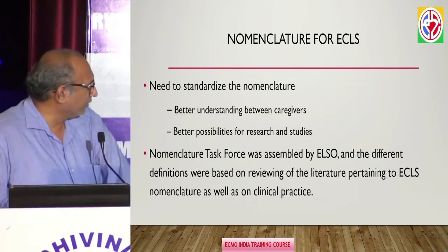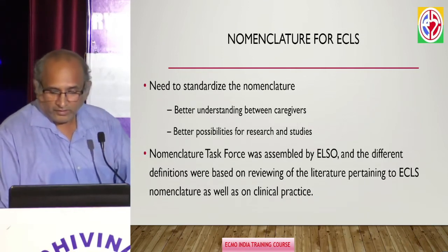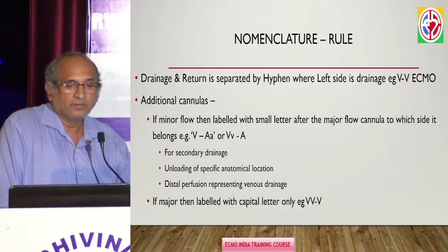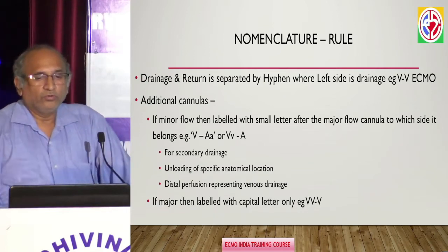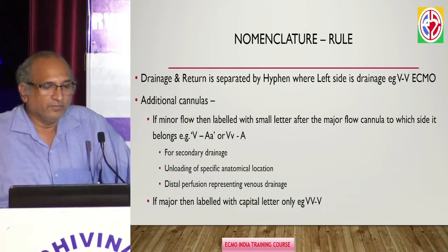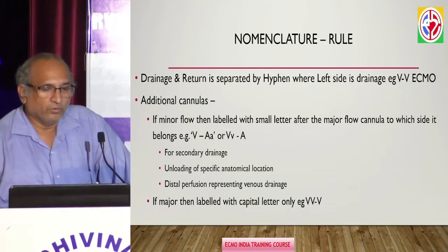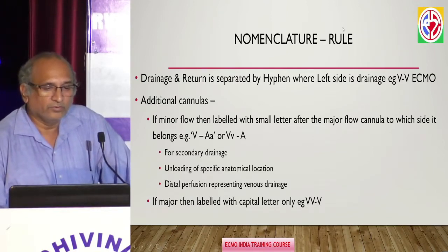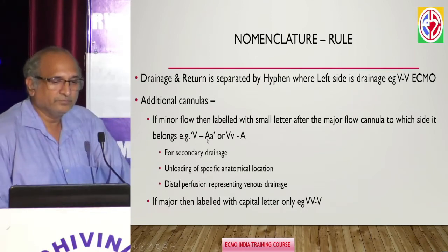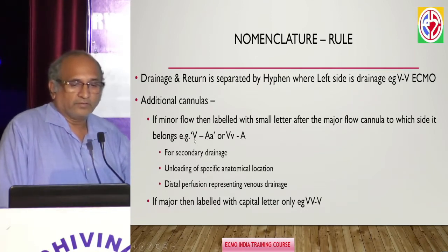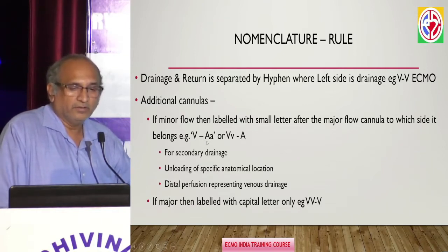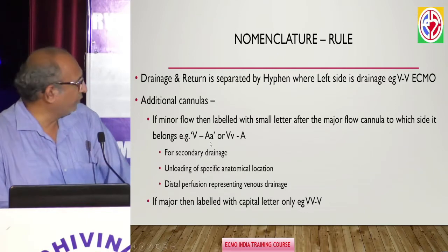We know that we should have a standard nomenclature, and the ELSO task force has taken on the task to standardize the nomenclature for ECLS. There are certain rules: drainage and return cannulas are separated by a hyphen. A capital letter means a major vessel has been connected; a small letter means a smaller vessel has been connected.